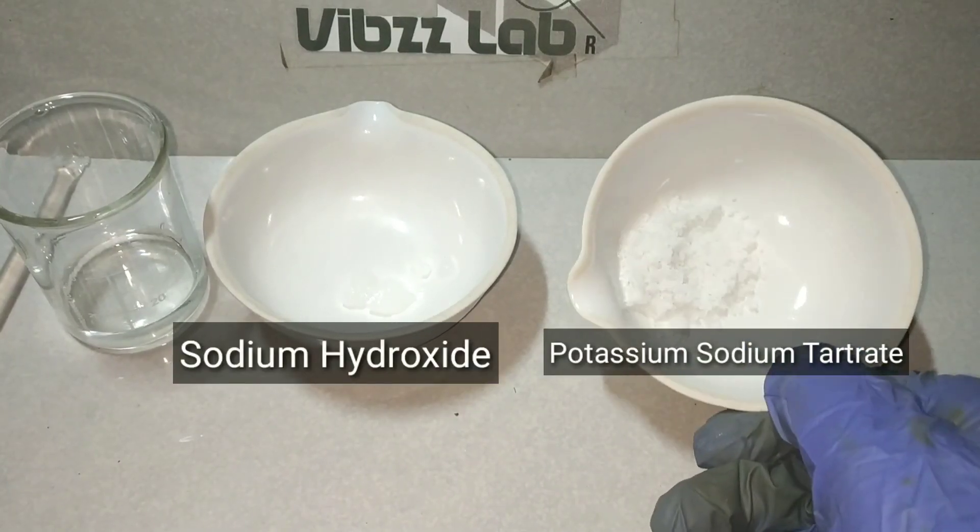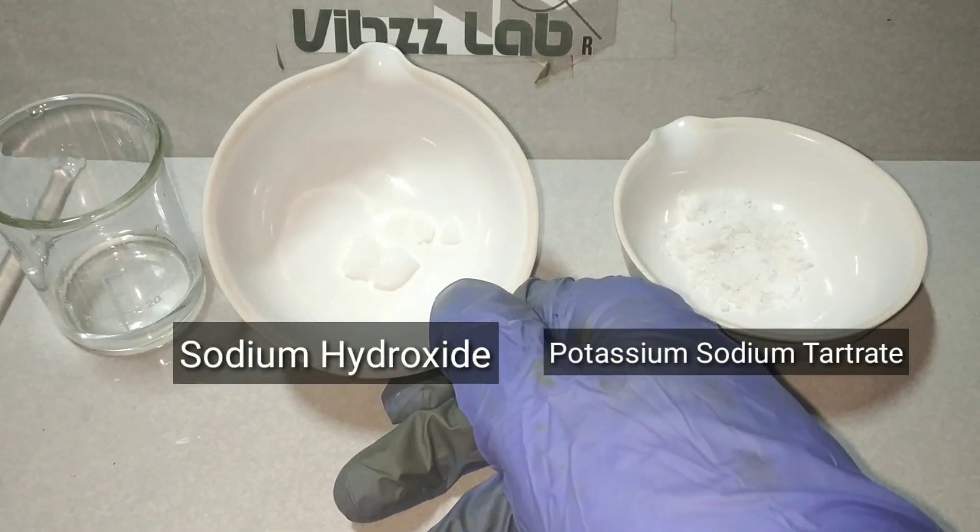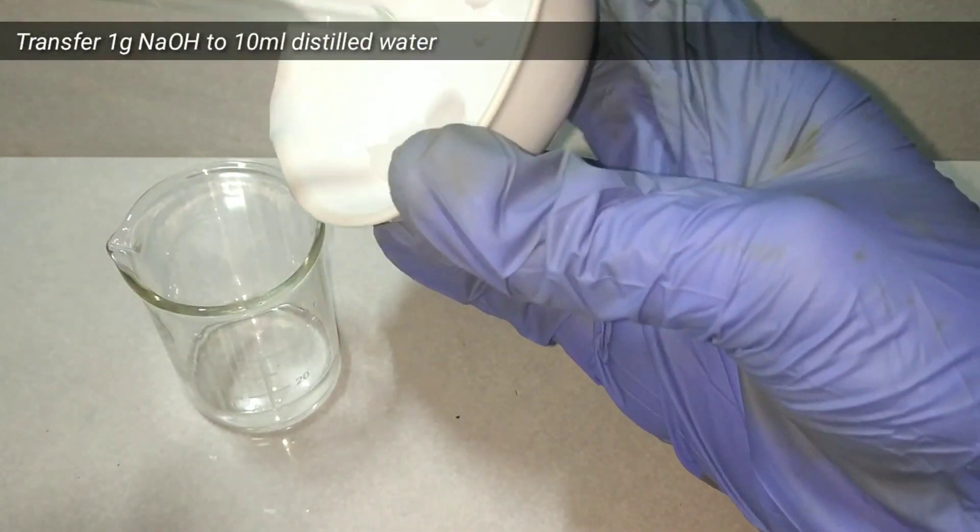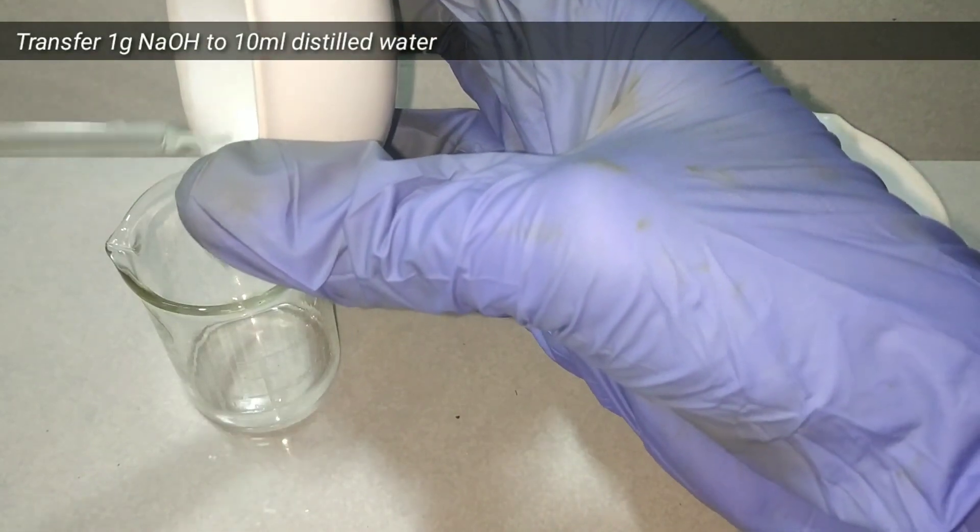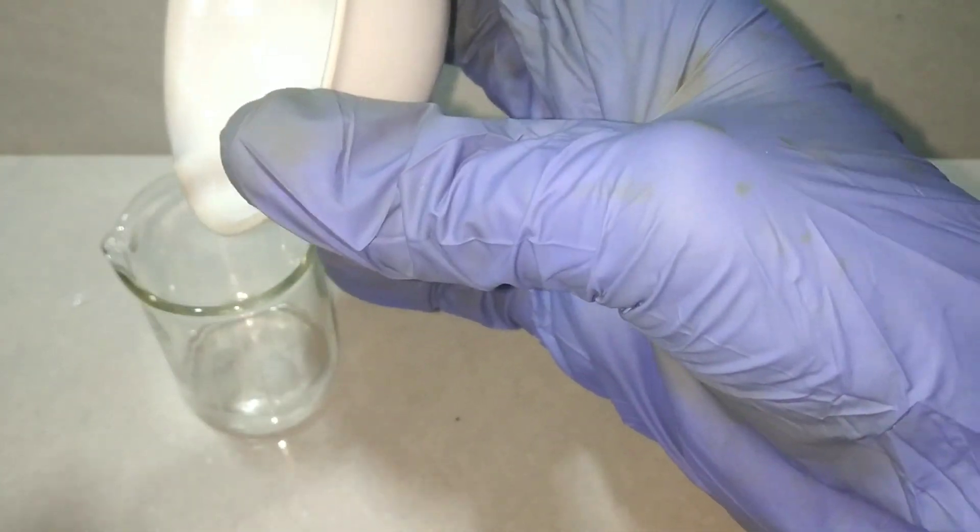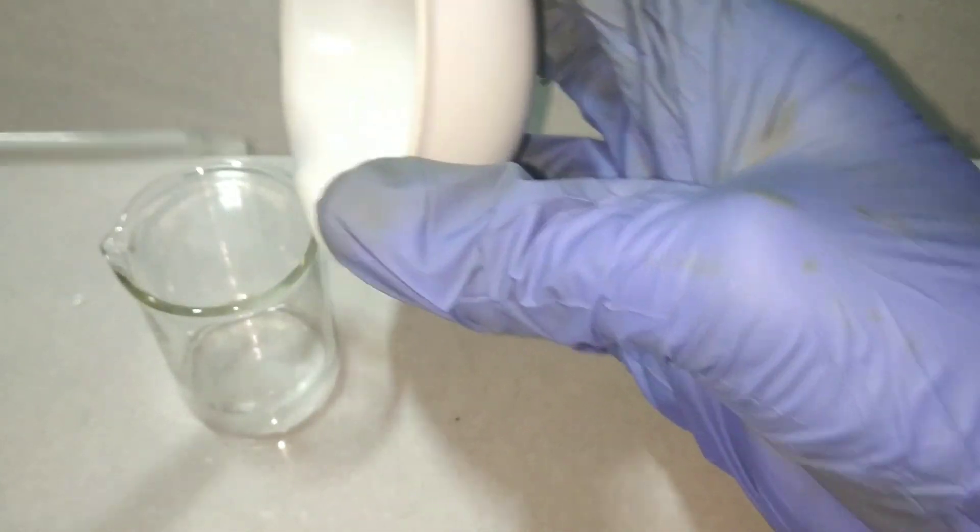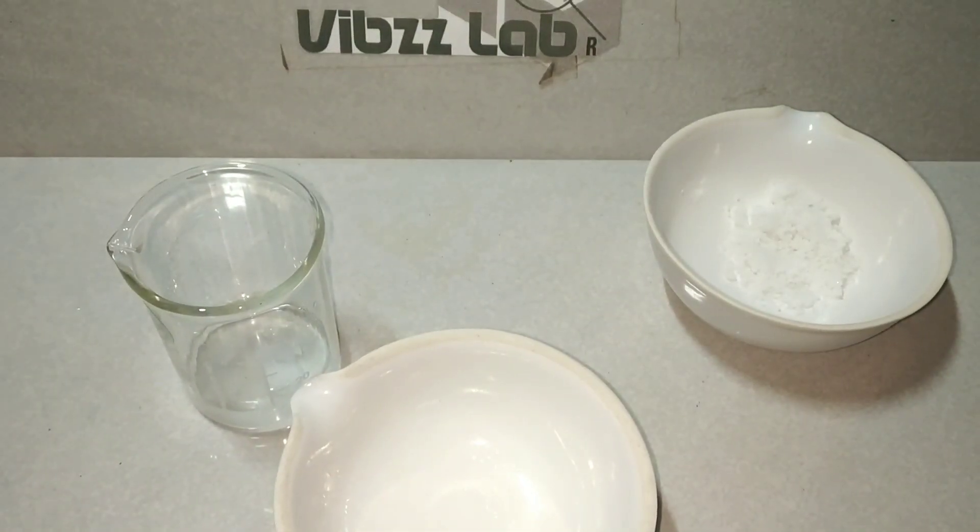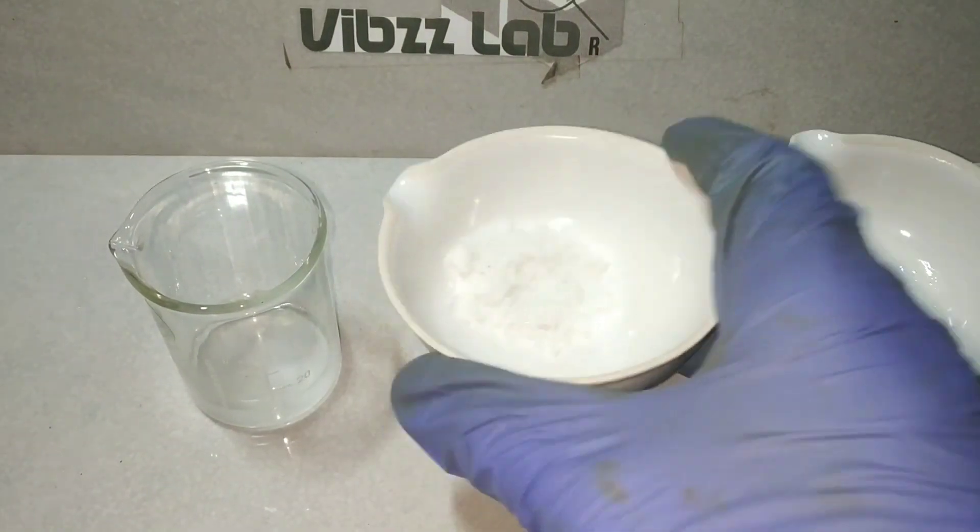Now for making Fehling B solution, we need 1 gram of sodium hydroxide and 3.45 grams of sodium potassium tartrate for 10 ml of the reagent. Start by dissolving the pre-weighed sodium hydroxide in 10 ml of distilled water. Into that, we add 3.45 grams of sodium potassium tartrate and mix them well.